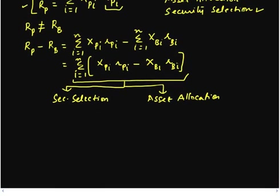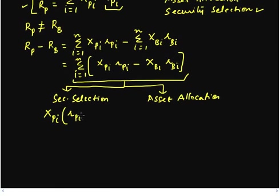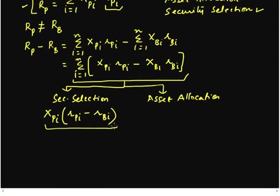Let's talk about security selection first. I'm investing XPi percentage of funds in my portfolio, and the difference between the returns of this portfolio from the benchmark portfolio may be because the assets I have selected within each asset class offer a return different from the benchmark. So this is the effect of security selection: we multiply our portfolio weight XPi by the differential returns, RPi minus RBi.